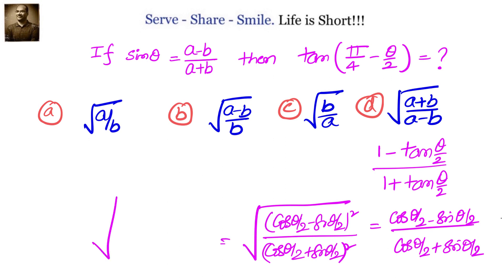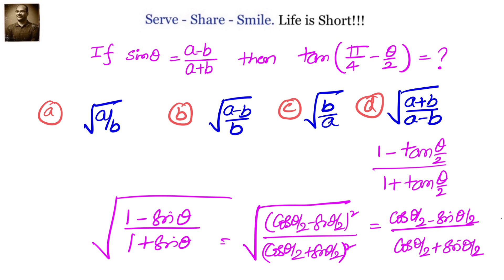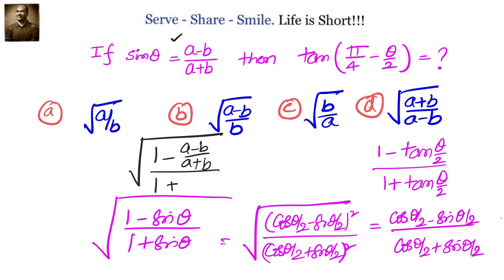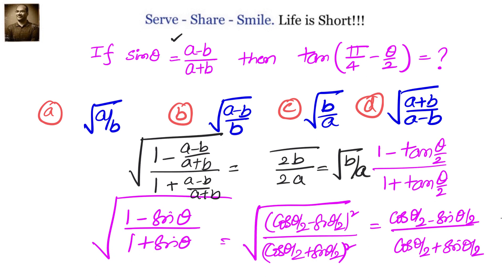Simplifying inside the square root gives √[(1 minus sin θ) divided by (1 plus sin θ)]. Now it is simple because we know sin θ equals (a minus b)/(a plus b). Substituting, we get √[(1 minus (a minus b)/(a plus b)) divided by (1 plus (a minus b)/(a plus b))], which simplifies to √[2b over 2a], which equals √(b/a).